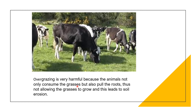Overgrazing is also very harmful, mainly because animals not only consume the grasses but also pull their roots, not allowing the grasses to grow and replenish. This exposes the soil as the grass cover is removed, ultimately leading to soil erosion. Faulty methods of agriculture such as shifting agriculture and ploughing fields along the slope also expose areas to soil erosion. Soil erosion due to shifting agriculture is one of the major problems in the northeastern states of India.